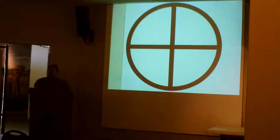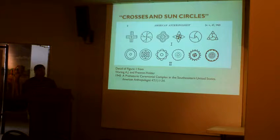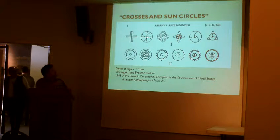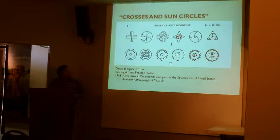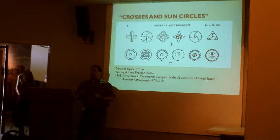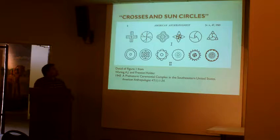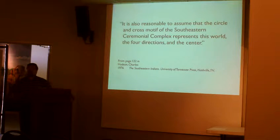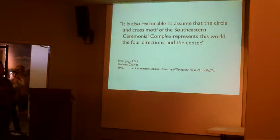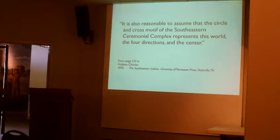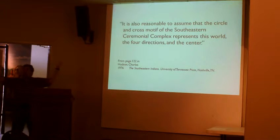Archaeologists trying to interpret this symbol offer varying interpretations. One older idea is that it is a sun circle — a 1945 article shows all the different variations identified, with the idea that all these variations in some way mean the sun. Other archaeologists interpret this same symbol as a cosmogram, a depiction of the structure of the universe. As one quotation puts it, the circle-and-cross motif of the Southeastern Ceremonial Complex represents this world — the four directions at the center: north, south, east, west — not the upper world of the sky.